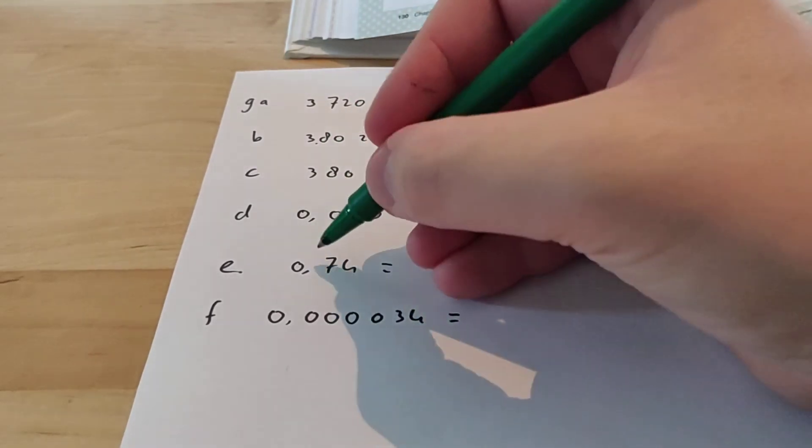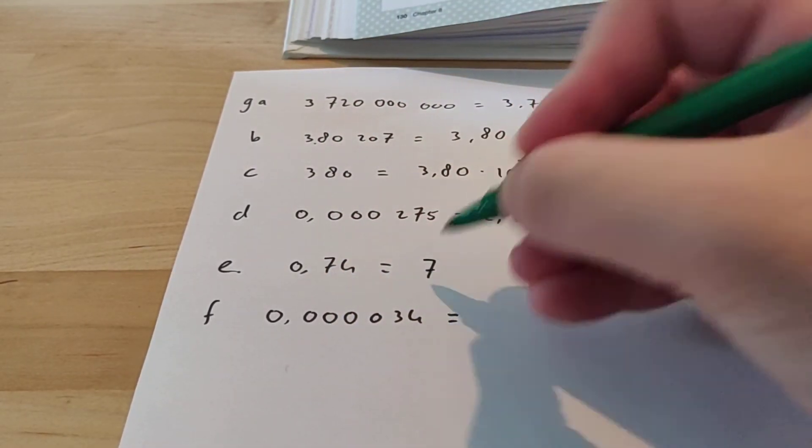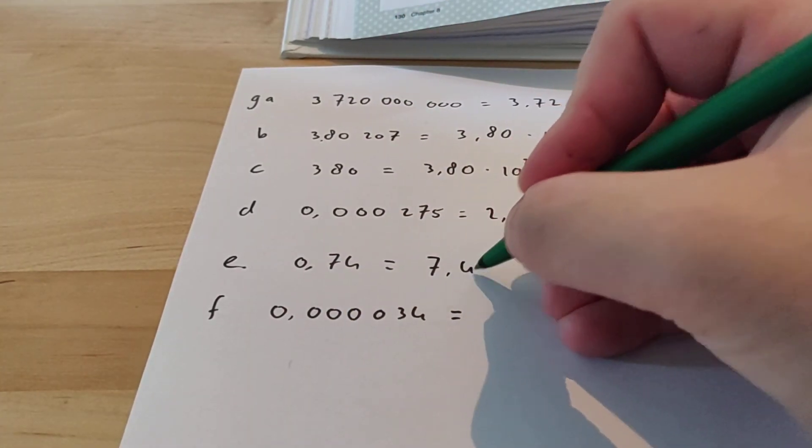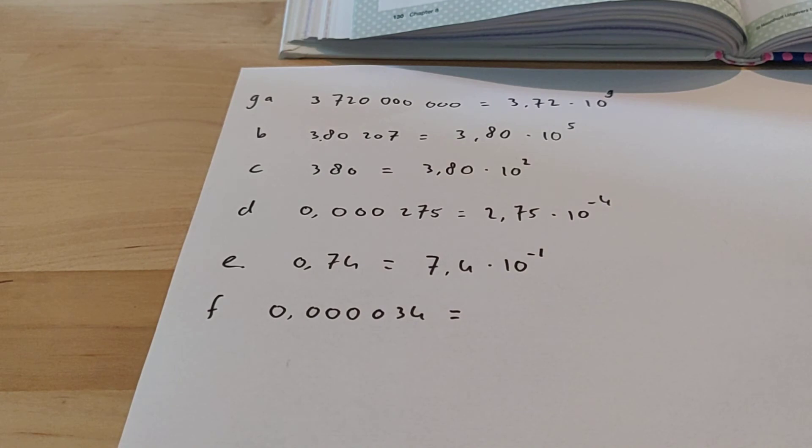The next one. Yeah, the first digit we see that is not 0 is a 7. So the point only moves one place. So you get 7.4 times 10 to the power of minus 1.